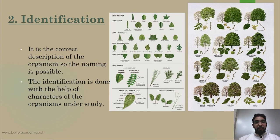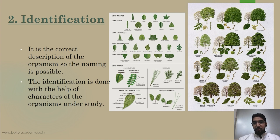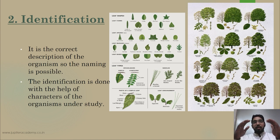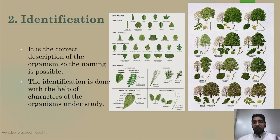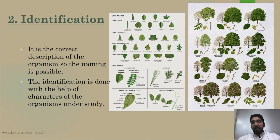Then we have identification. Based on the characters studied, we identify a particular organism. For example, looking at a chart showing different trees with photos, leaves, and branch structures — based on the canopy of the tree (its shape), the leaf shape, leaf arrangement on branches, leaf apex, leaf base, and leaf margin, we can identify a particular tree. After studying all these characters, we identify the organism.